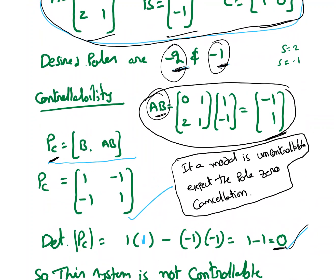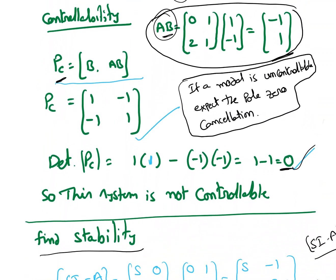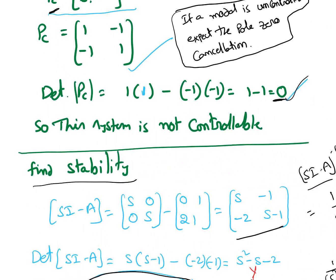If a model is uncontrollable, expect a pole-zero cancellation. If you have an uncontrollable model or system, that system has a pole-zero cancellation. We can find that by finding H(s), which is the transfer function. Once we find the controllability, I will find H(s) in a moment. Now find the stability.